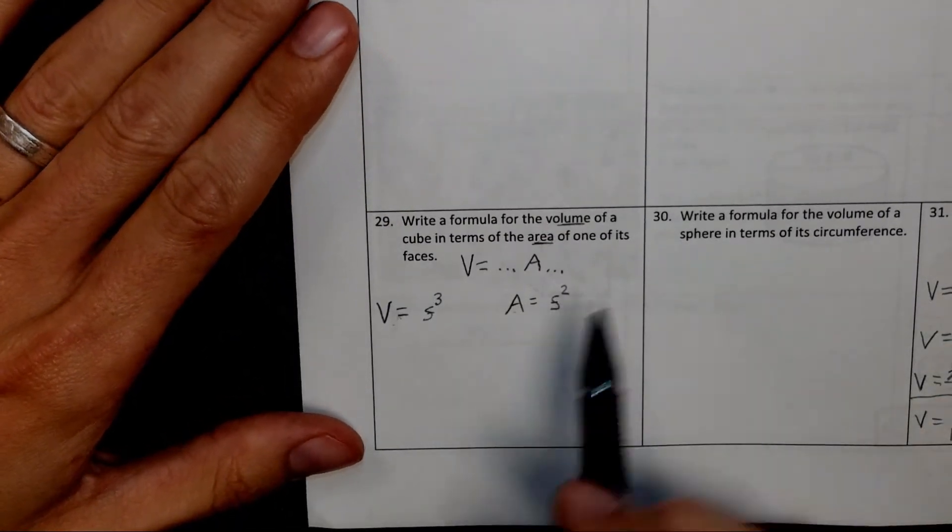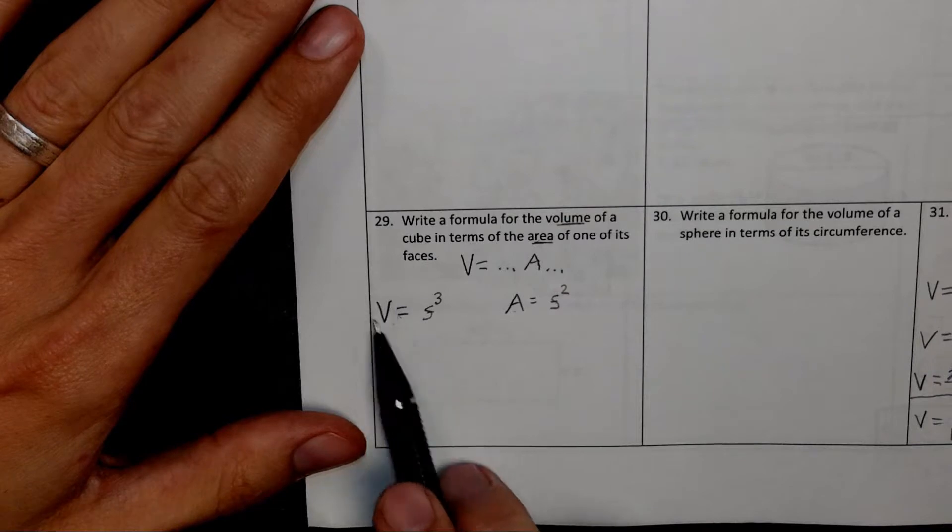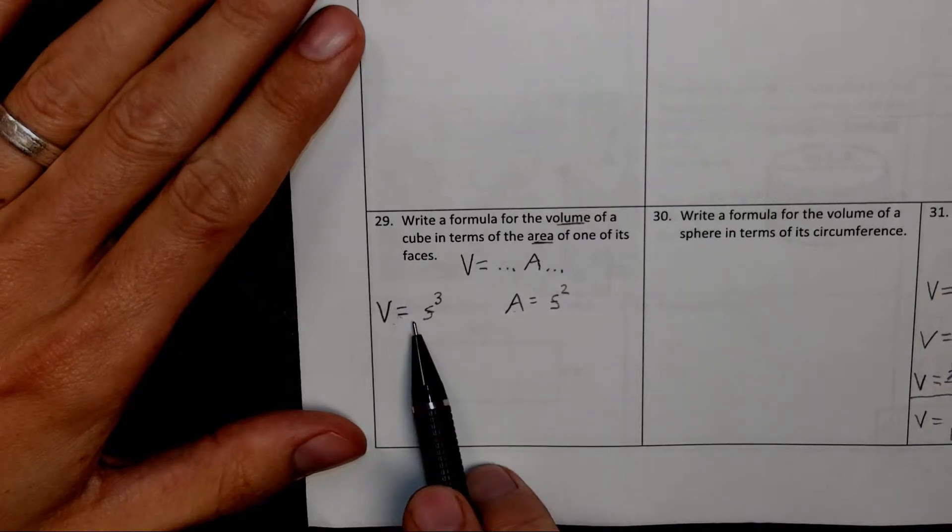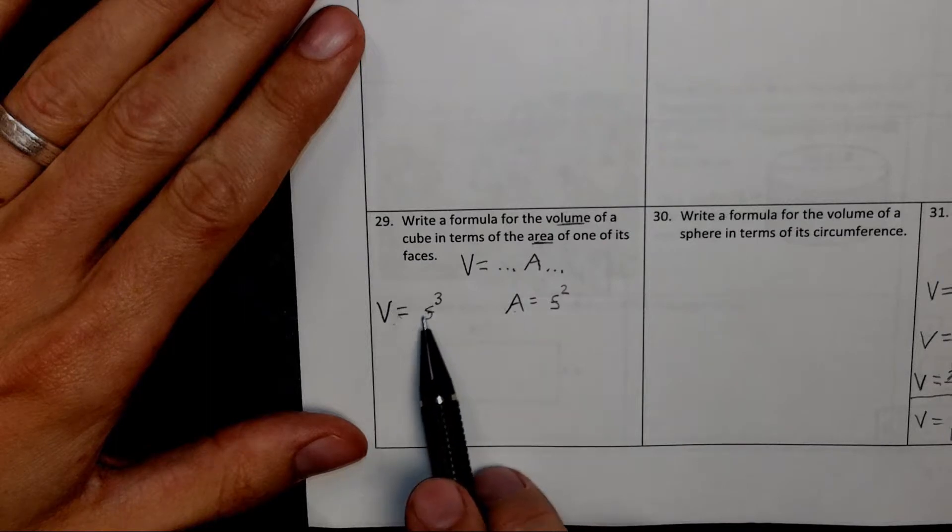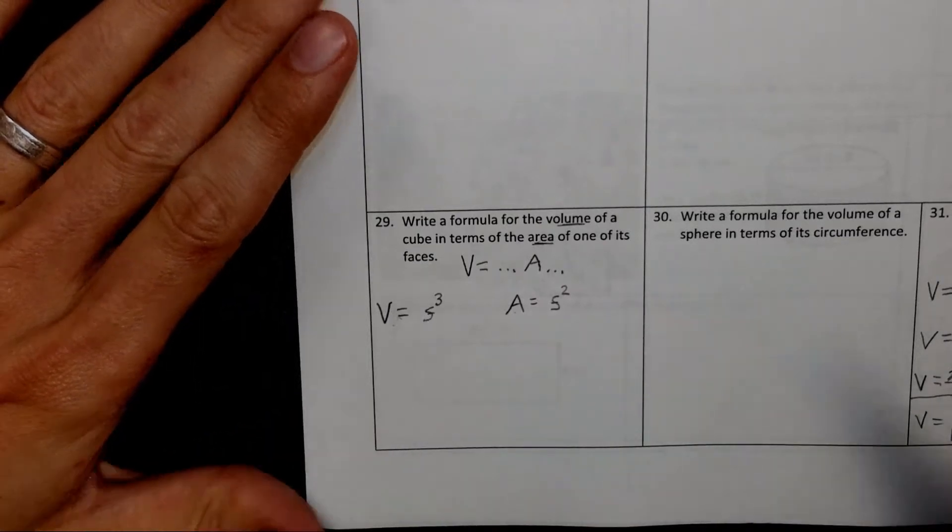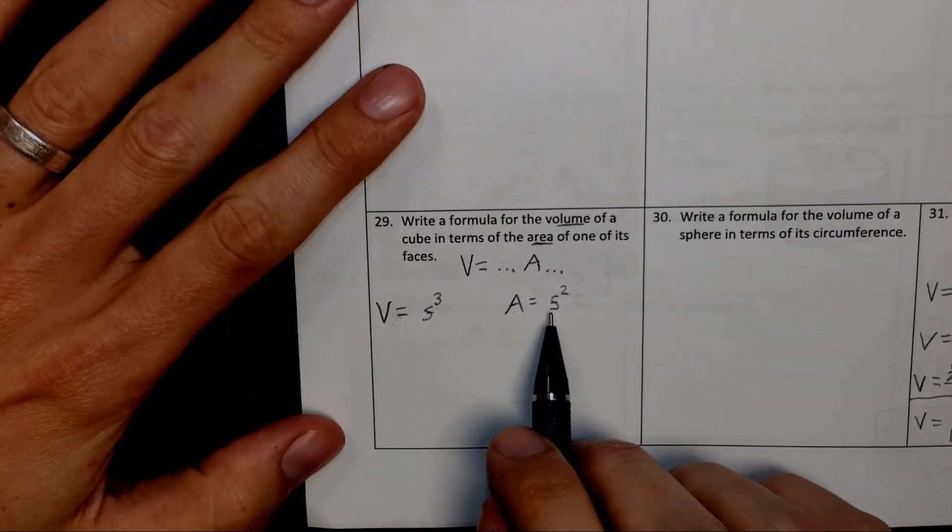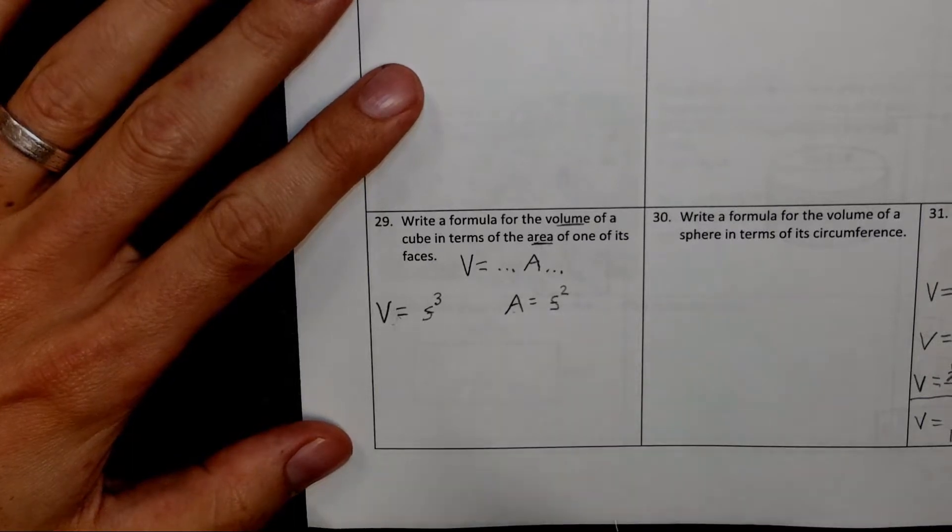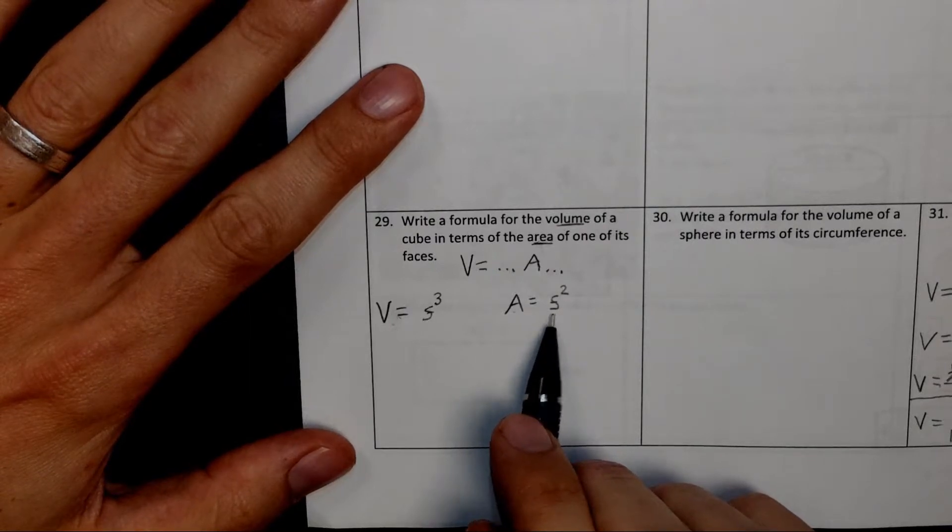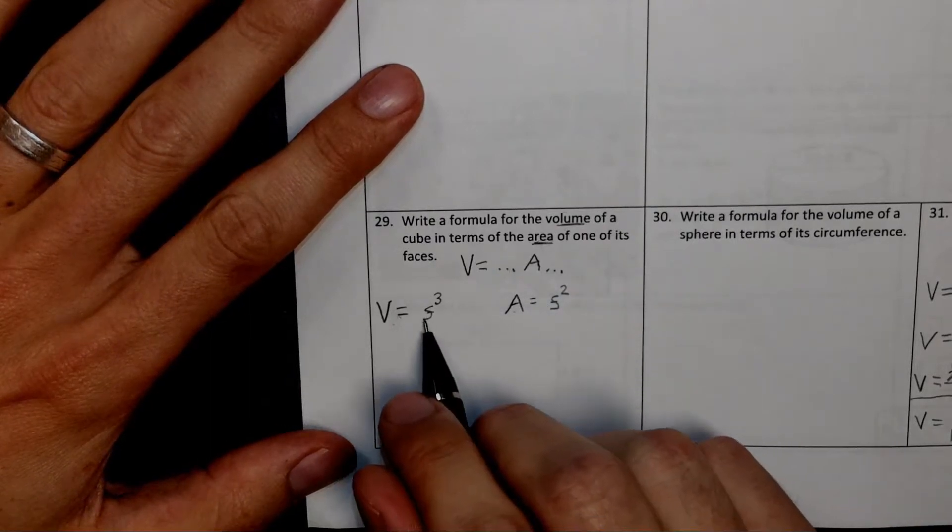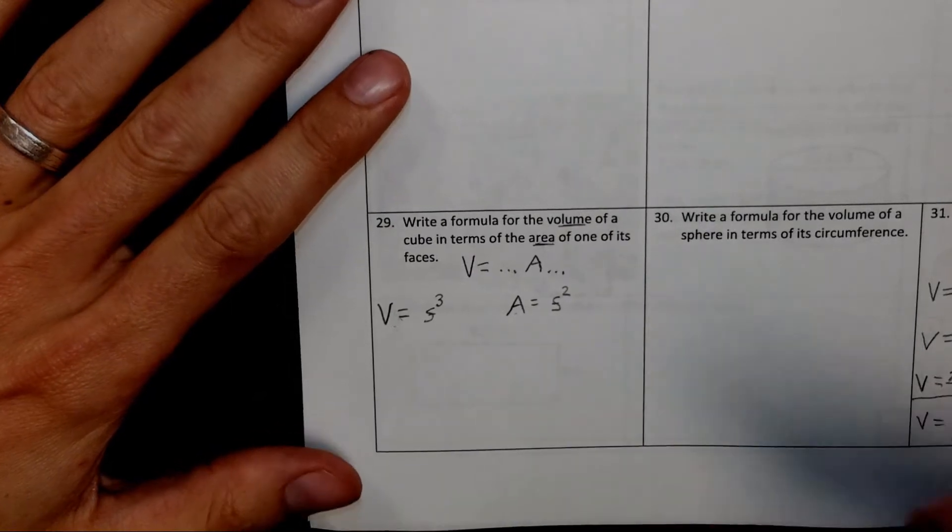Okay, so how do we take this volume formula and replace the S with an A? We're not just going to write an A there instead of an S. That would be a different formula. What we have to do is something called substitution. So in other words, I have to first solve this equation for S, and then I can substitute that in to the other equation. So here's the idea.